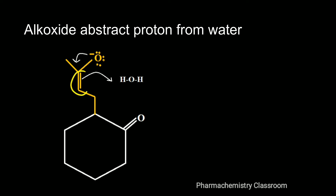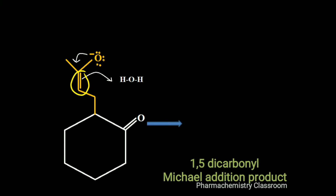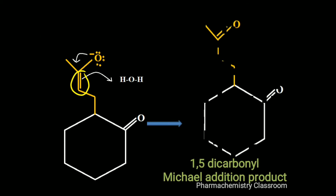In the next step, the alkoxide abstracts a proton from water. The negative charge on the oxygen shifts towards the carbon-carbon double bond, which makes this carbon-carbon double bond more basic, and the proton is abstracted from water to get the Michael addition product — a 1,5-dicarbonyl compound. Now we are getting a 1,5-dicarbonyl Michael addition product.